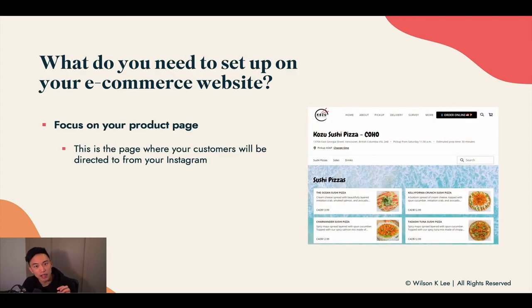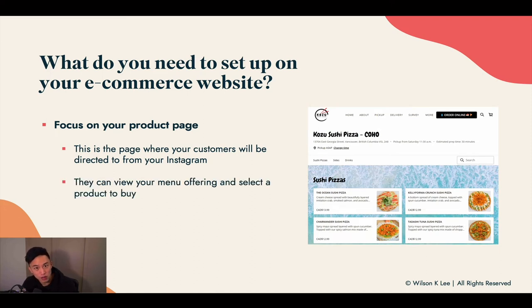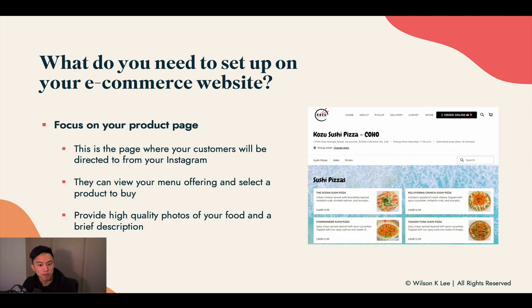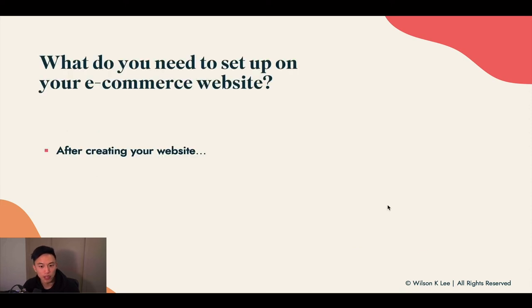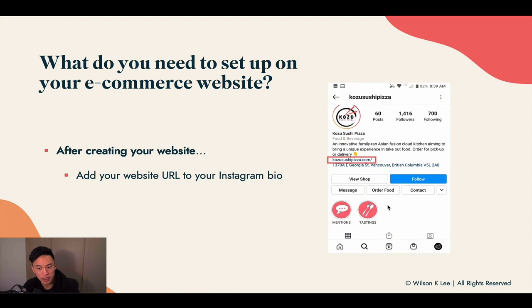What we really care about is your product page. This is the page that will be connected to your Instagram, directing people browsing on Instagram to this specific page. They can see your menu offerings, select a product to buy, view high-quality photos of your food, and read a brief description of each item. This is how customers click in and place their orders.